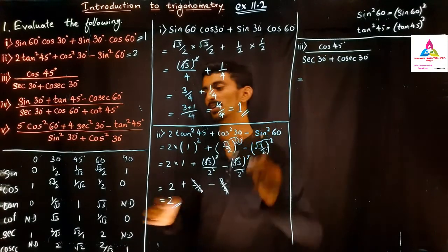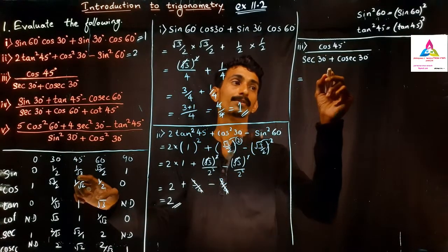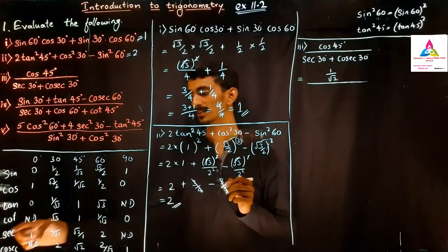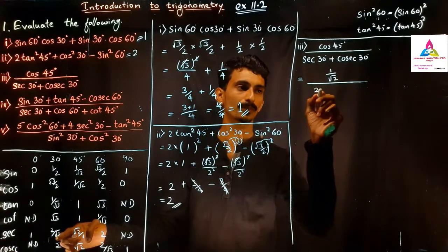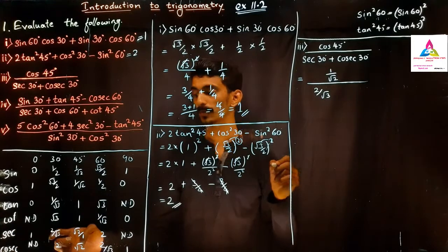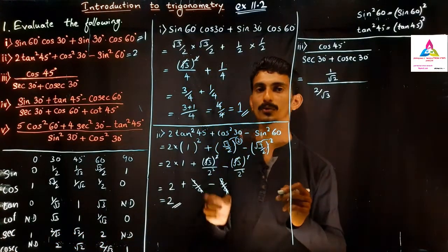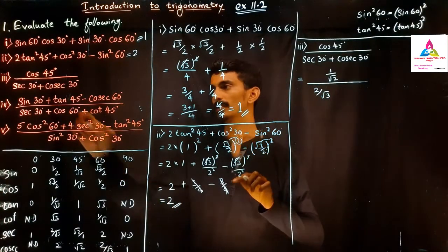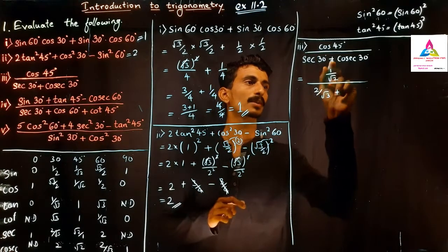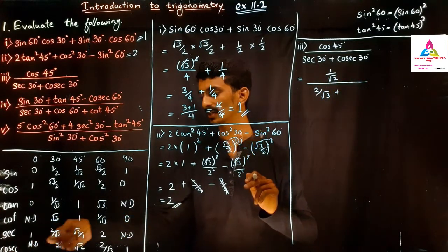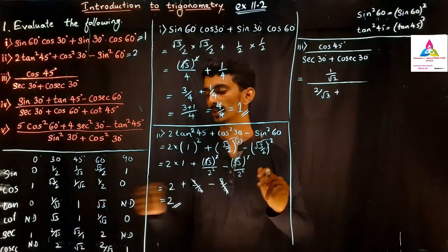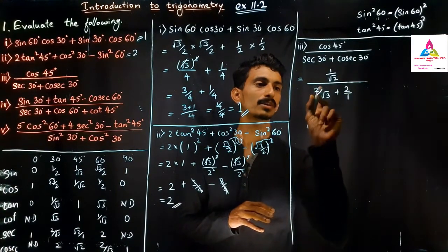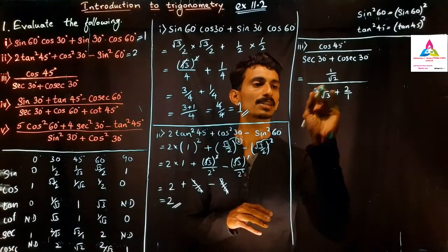Substituting values: cos 45° = 1/√2, sec 30° = 2/√3, cosec 30° = 2. The denominator becomes 2/√3 + 2. We need to find the LCM of the denominator terms, which is √3, giving us (1/√2) ÷ (2 + 2√3)/√3.